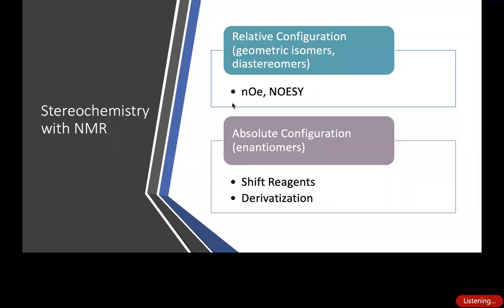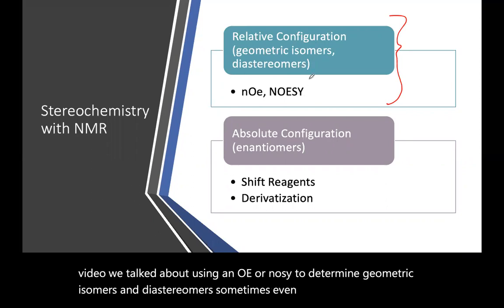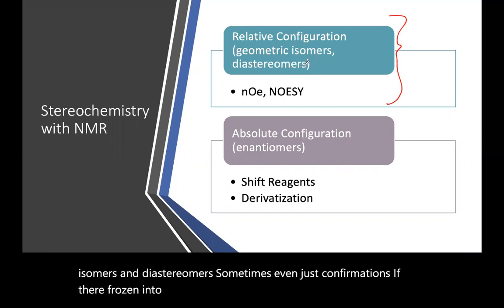Hello, we're going to talk about stereochemistry again. In the last video, you talked about using NOE to determine geometric isomers and diastereomers, sometimes even just conformations if they're frozen into one conformation. It shows you who is near each other in space.